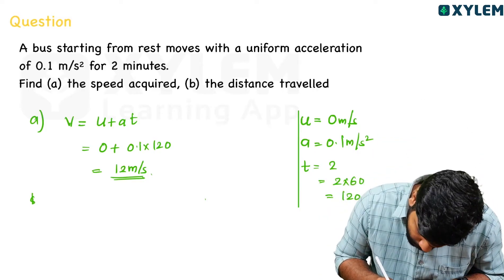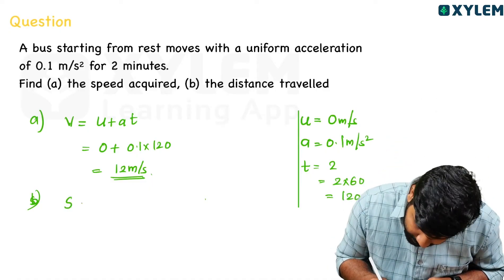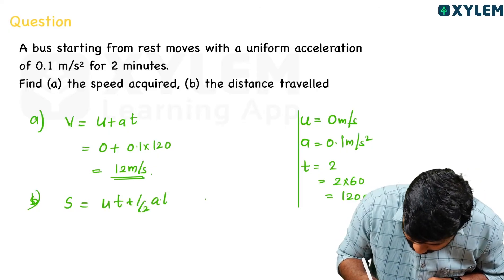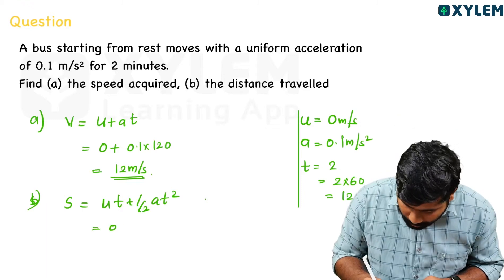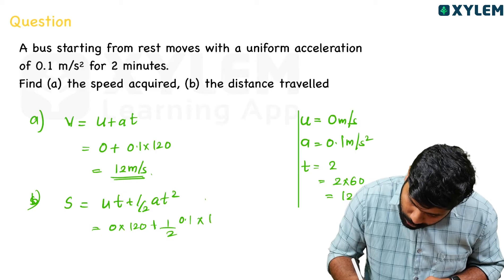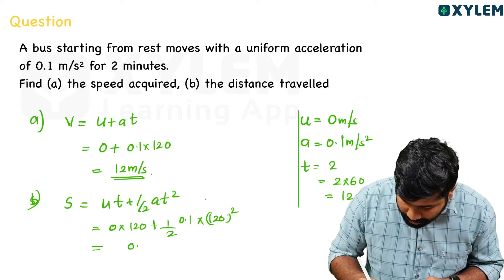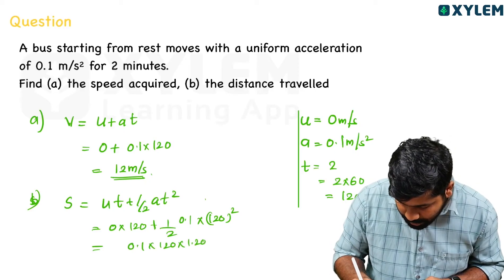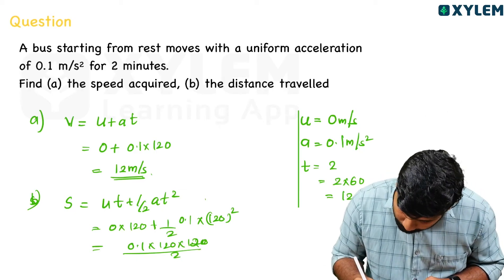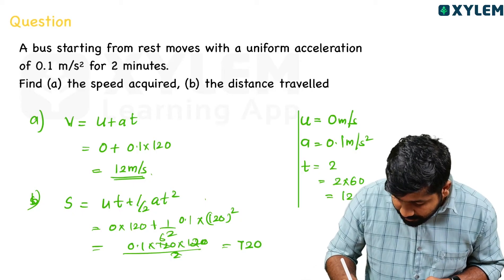For part B, we find the distance travelled using the second equation: s equals u·t plus half a·t². Substituting: s equals 0 into 120 plus half into 0.1 into 120². That gives 0.1 into 120 into 120 divided by 2. 0.1 into 120 is 12, half of that is 6, and 6 into 120 gives 720 metres.